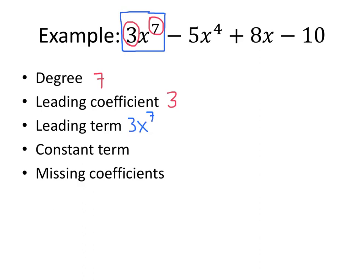On the other end of the spectrum, the constant term is simply the constant value, in other words, the number times x to the 0 power. In this case, that's minus 10.